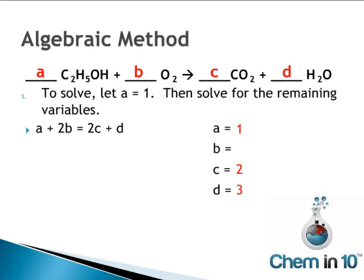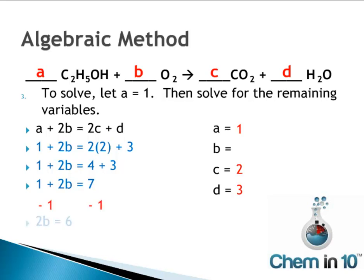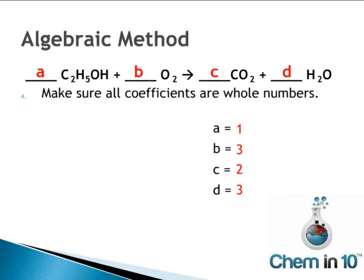Using A equals 1, C equals 2, and D equals 3, we solve for B: 1 plus 2B equals 2 times 2 plus 3, or 1 plus 2B equals 7. Subtracting 1 from both sides gives 2B equals 6, and dividing by 2 gives B equals 3. Since all coefficients are already whole numbers, the balanced equation uses A equals 1, B equals 3, C equals 2, and D equals 3.